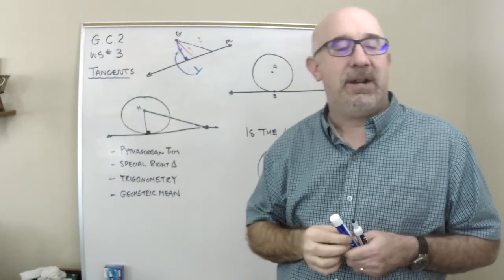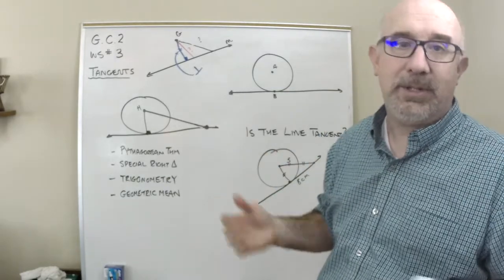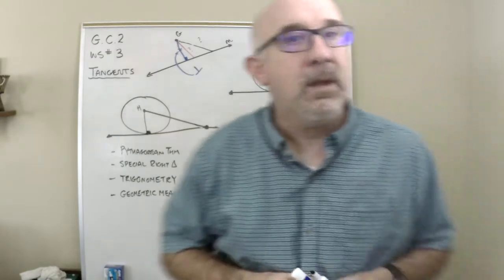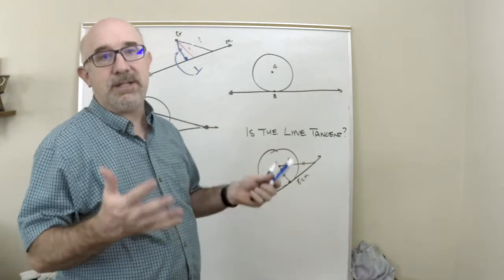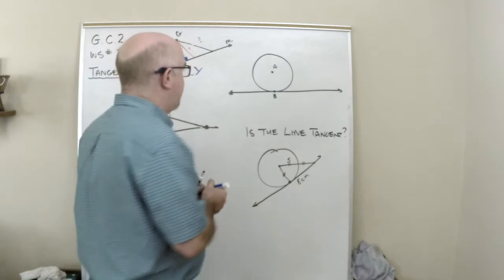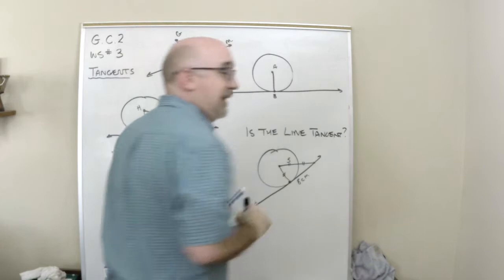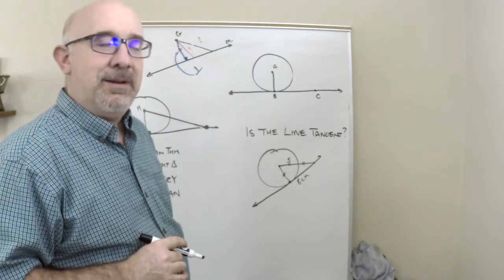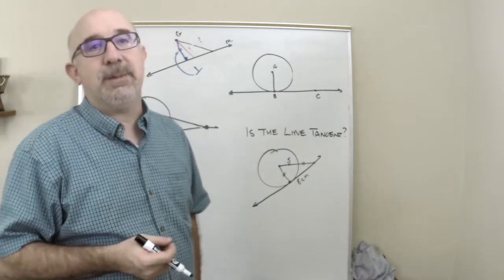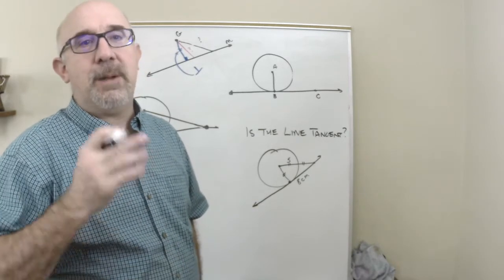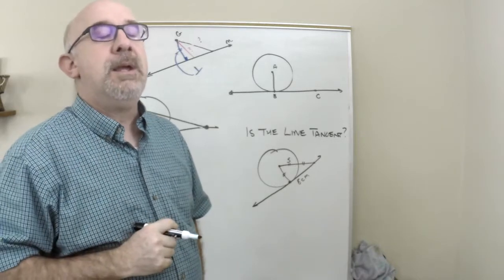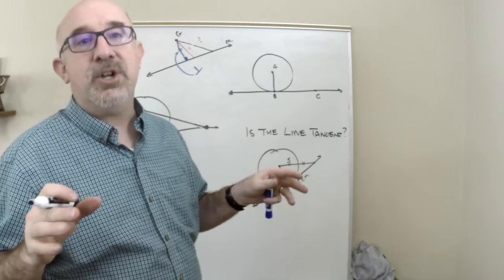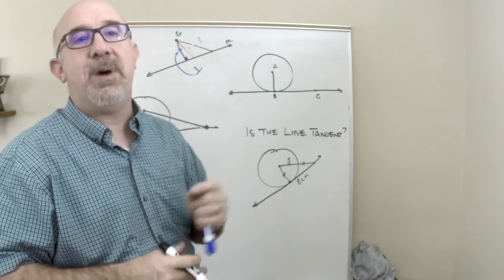I'm going to use that idea — it's something that can be established — to tell you a very important property about the tangent. I'll use what's called an indirect argument to prove something. An indirect argument basically says you assume the opposite, and you prove that that cannot ever happen. So then the reverse of that is the truth.